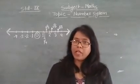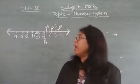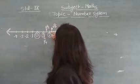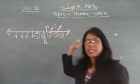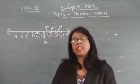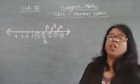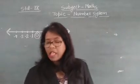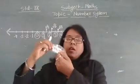So Nitin starts the game and he picks numbers 1, 2, 3, 4 — all such type of numbers he picks. The host tells that you picked all the natural numbers, and he keeps them all in a pouch.